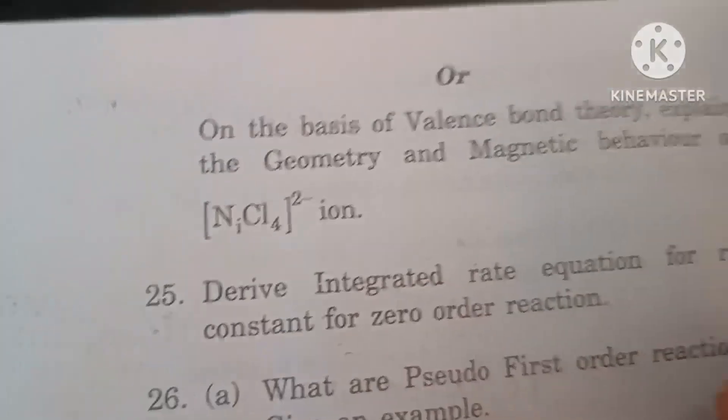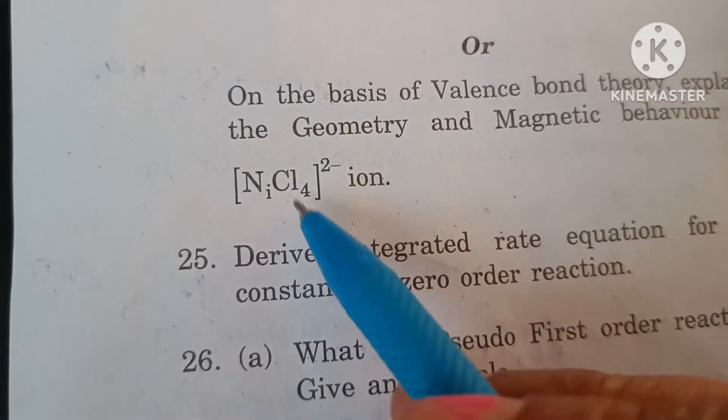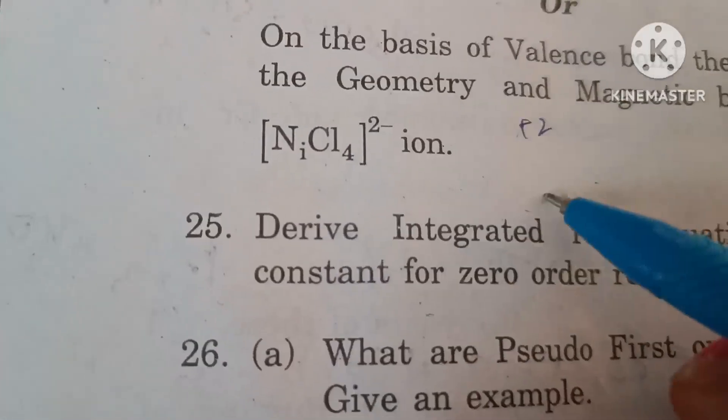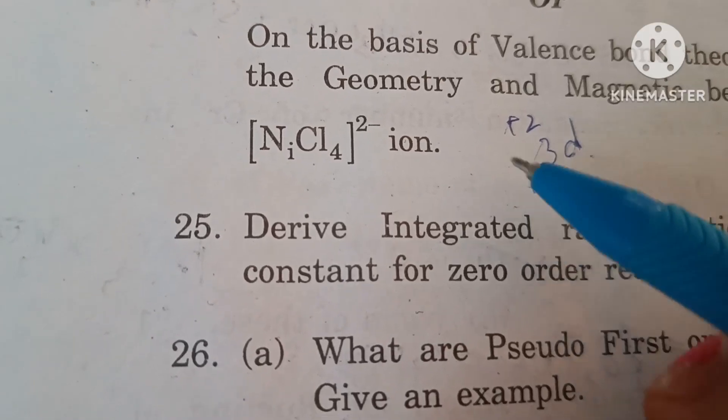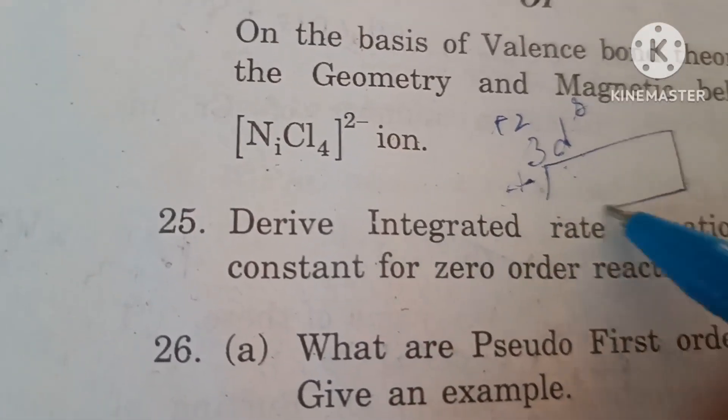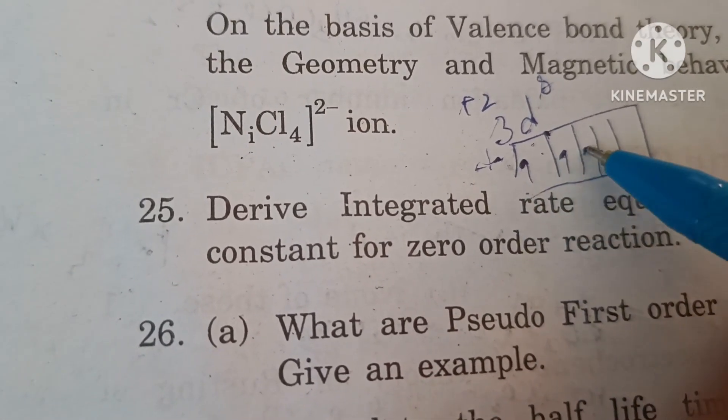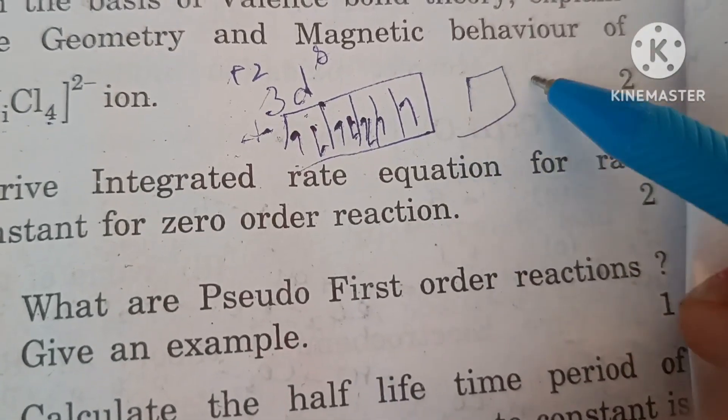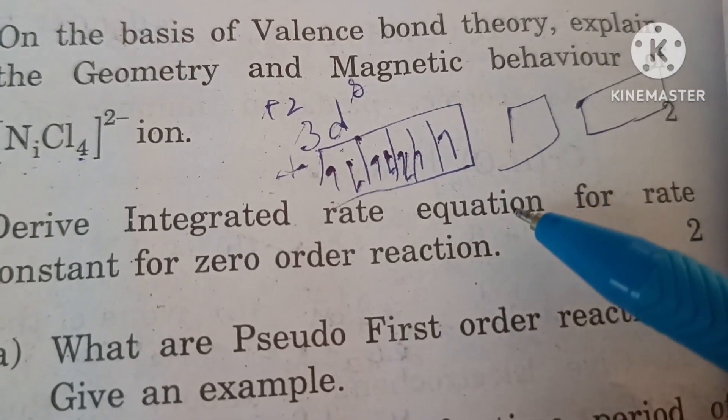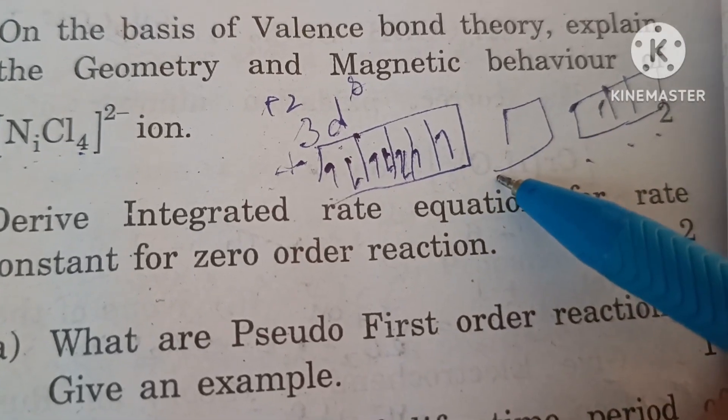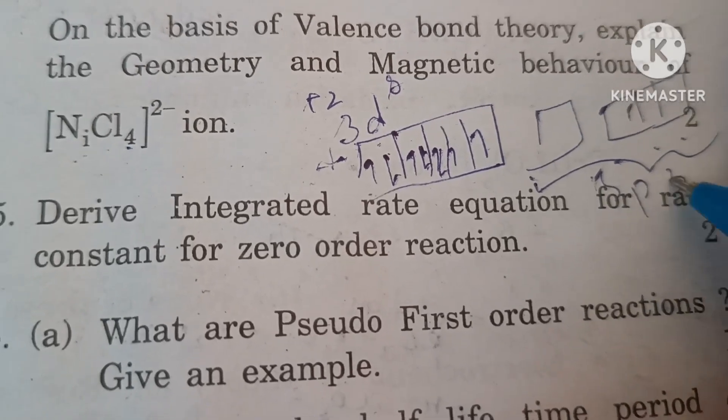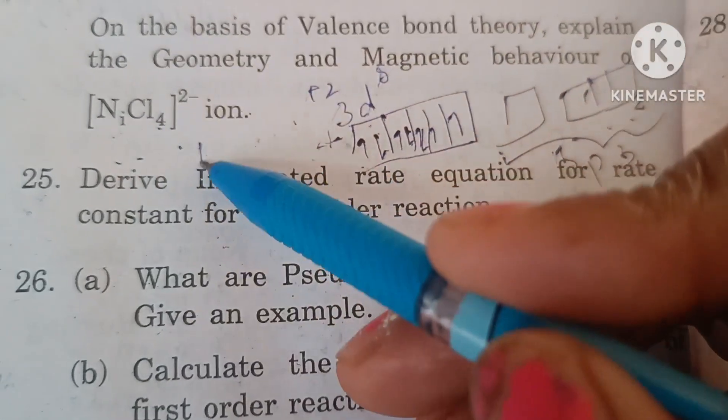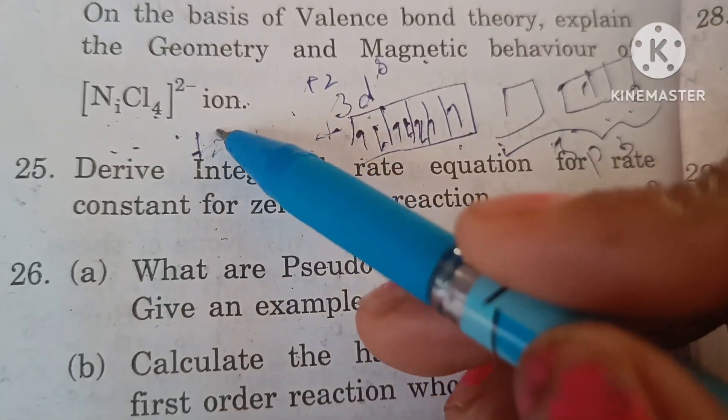On the basis of valence bond theory explain the geometry and magnetic behavior of tetrachlorido nickelate. Oxidation state of nickel in this is +2. In +2 oxidation state configuration of nickel ion is 3d8, so there are eight electrons. As the chloride is a weak field ligand it cannot cause pairing of electrons, so the outer d orbitals, one s and three p orbitals will combine to give sp3 hybridization. Hence tetrachlorido nickelate(II) ion is tetrahedral in nature and the magnetic behavior is paramagnetic.